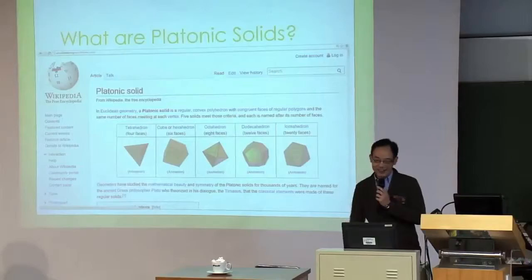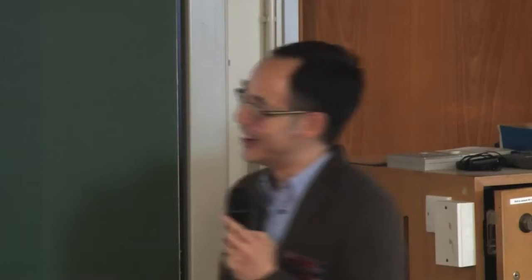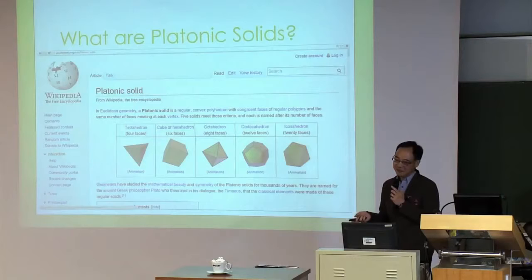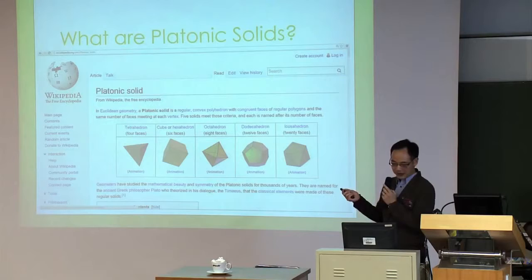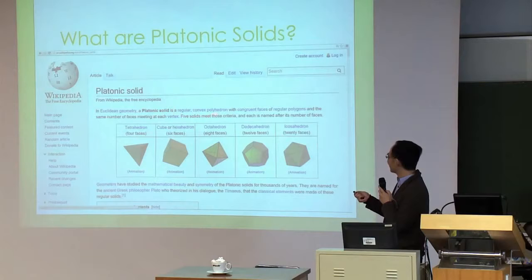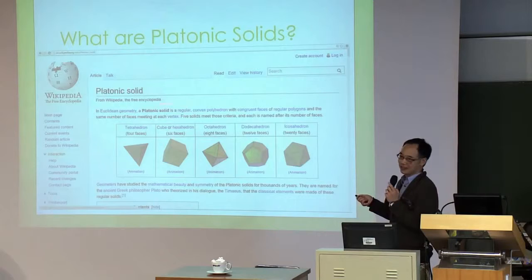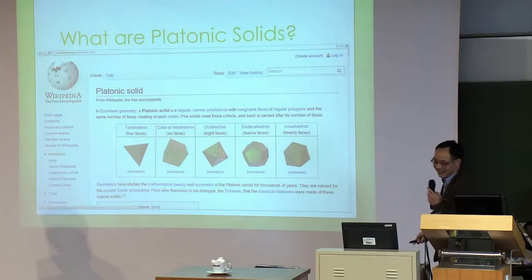So that was my first time coming across this phrase. Like you, if there's something I don't know, I'll go to Wikipedia and type in 'platonic solids.' This is what you will find. Very common to many wiki pages on mathematics - they are cryptic. If you read the first line: 'A platonic solid is a regular convex polyhedron with congruent faces of regular polygons and the same number of faces meeting at each vertex.' If you don't know what that means, that means you're normal.